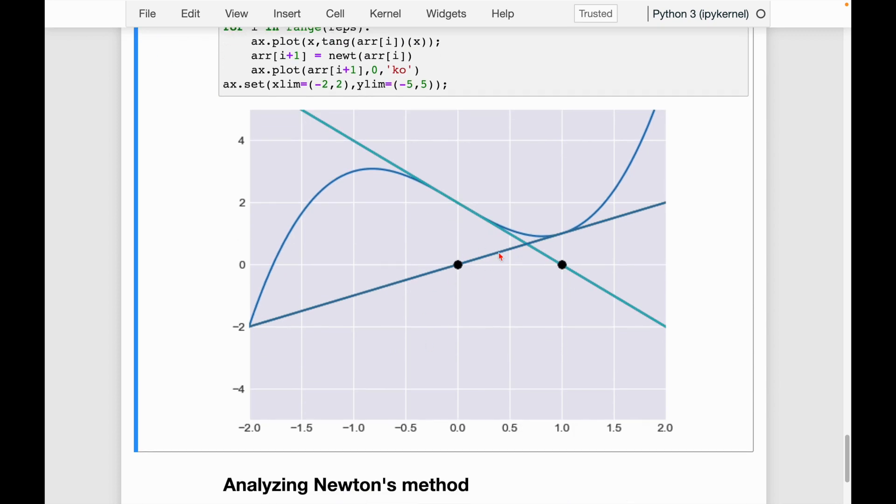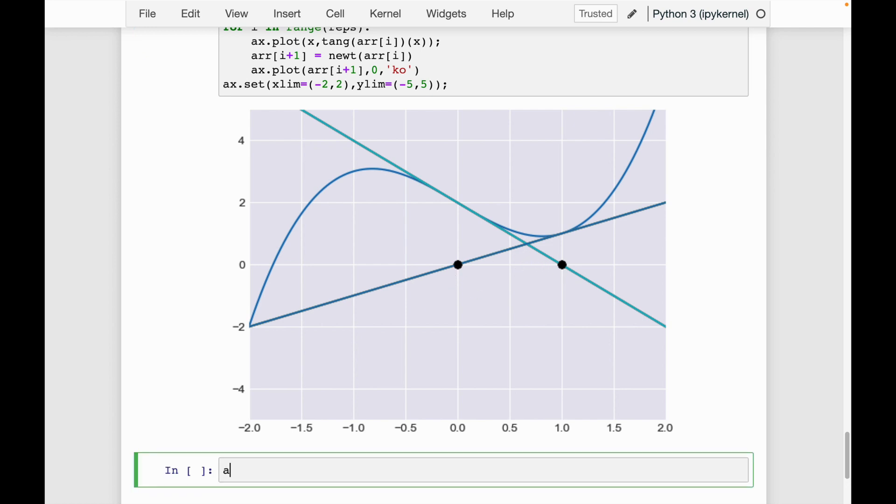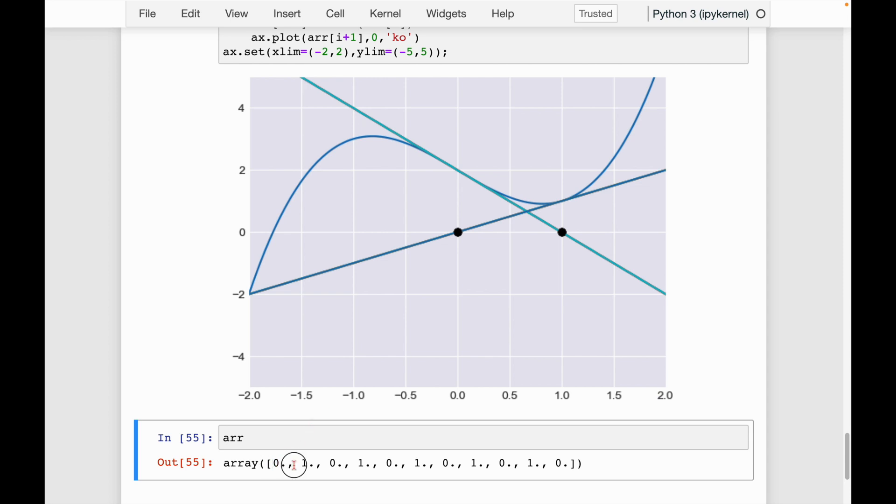So what's happening here, remember we did 10 reps, but Newton's method is oscillating perfectly between zero and 1.5. So for instance, if I looked at ARR, I can see here, it's giving me the points zero, one, zero, one, zero, one. So this is one example where Newton's method just doesn't work at all. It's going to forever oscillate between these two values.